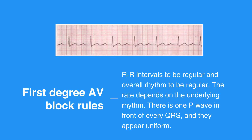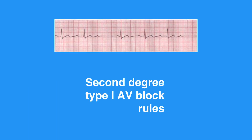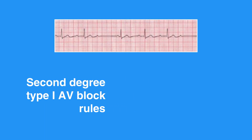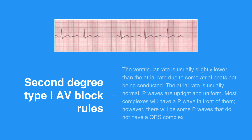The QRS complex measures less than 0.12 seconds. Second degree type I AV block, or Wenckebach, rules include RR interval to be irregular, but there is usually a pattern to it. The RR interval gets longer as the PR interval gets longer.